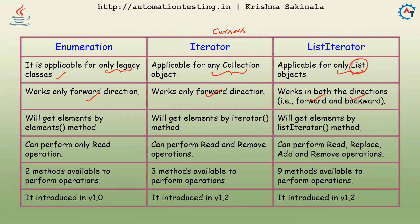In terms of direction, Enumeration and Iterator support only forward direction, but ListIterator supports both forward and backward directions. We get elements using the elements() method for Enumeration, the iterator() method for Iterator, and the listIterator() method for ListIterator.